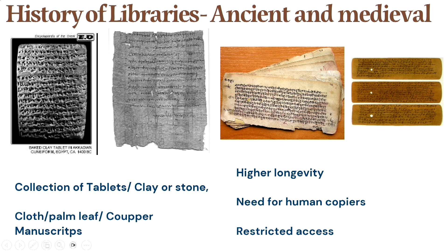In the olden times, we had the oldest forms — clay tablets or stone inscriptions at multiple places. The collection of tablets was used to communicate certain ideas or rules to the community. In India, we had different types of writing material: cloth, palm leaf, copper manuscripts. One thing you notice is these things had very high longevity — that's why we can still find many stone inscriptions. But they needed a lot of human copiers, and access was restricted — these manuscripts used to be preserved in temples, feudal lords' homes, or imperial palaces. Very few elite scholars could actually access this.